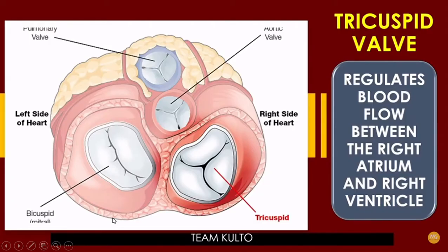Here is your tricuspid valve. The tricuspid valve regulates blood flow between the right atrium and the right ventricle. This is the first valve that you can see. The purpose of the valve is like doors — they allow blood to enter and exit from one side of the heart to the other parts of the body, and it also prevents backflow.